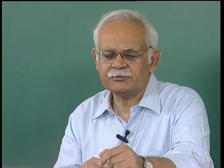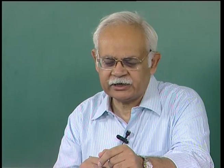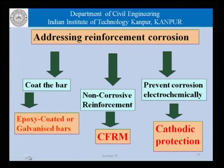In a nutshell, corrosion is something which is likely to happen in any case. There are different strategies that can be adopted to address the problem of reinforcement corrosion. One of them is to coat the bar, which is what we do with epoxy coated bars. The other is to use non-corrosive reinforcement altogether — something that does not get affected by oxygen, water, chlorides, or carbon dioxide — and that is where we have CFRM, or continuously reinforced fiber material.